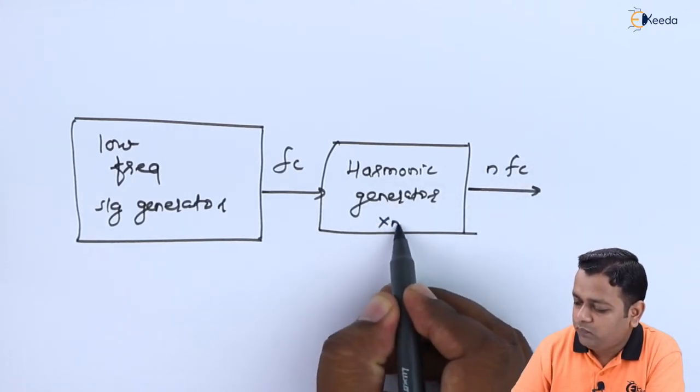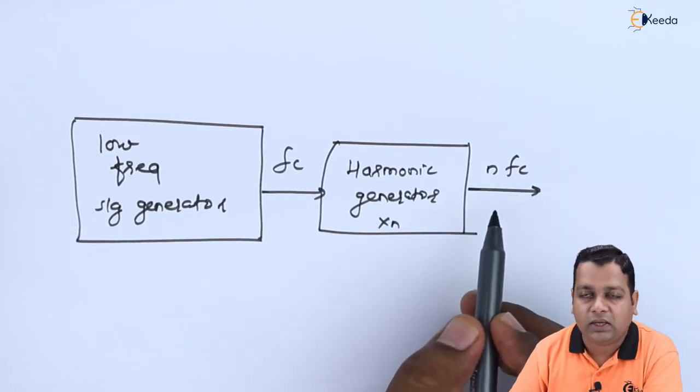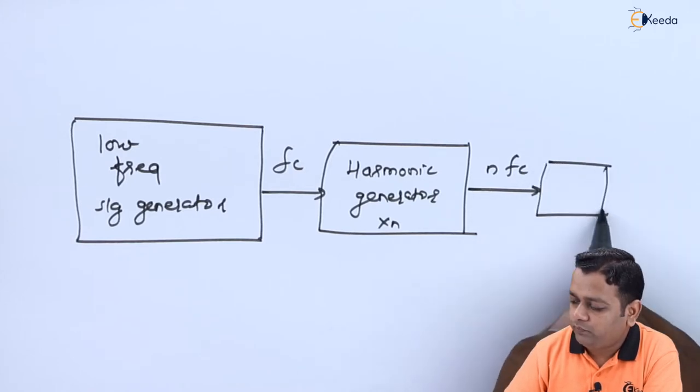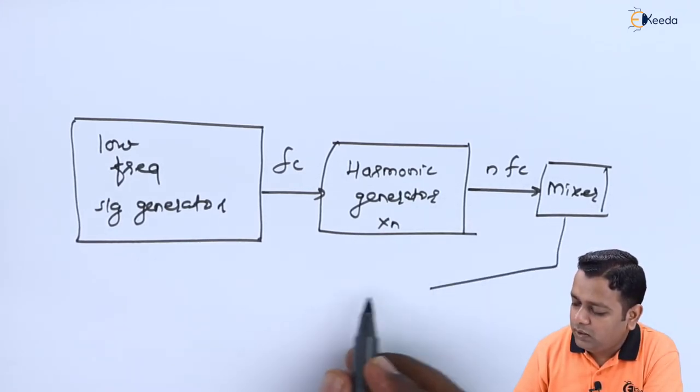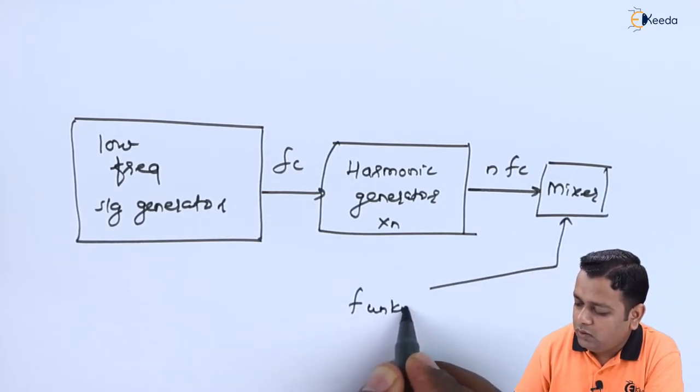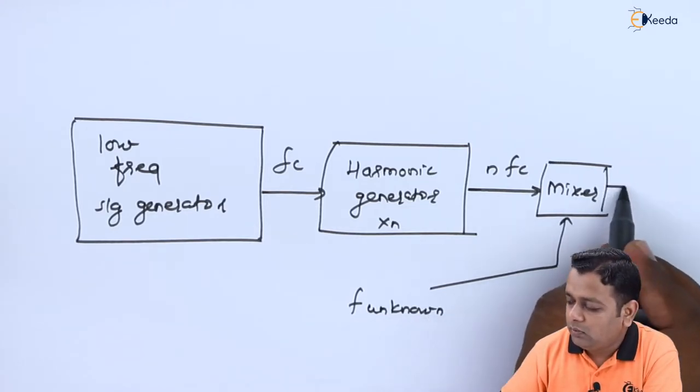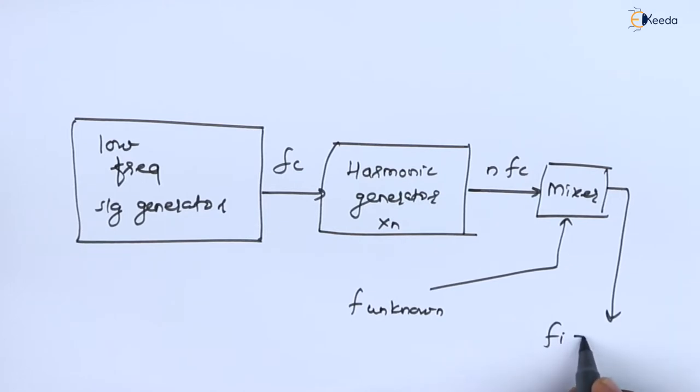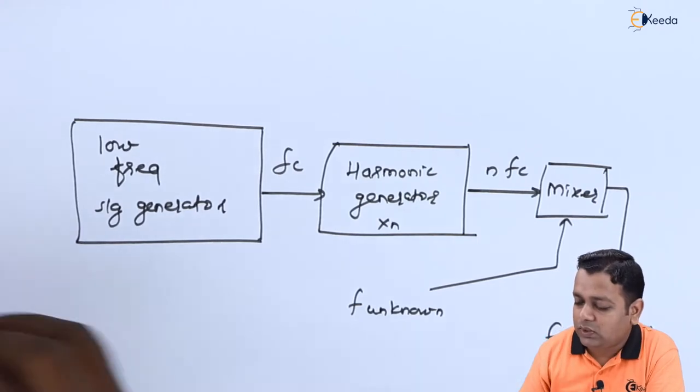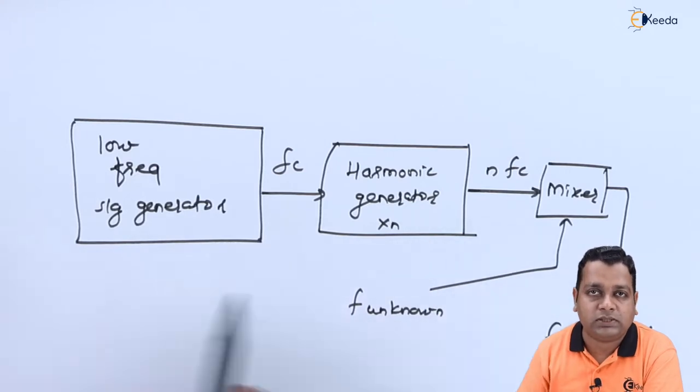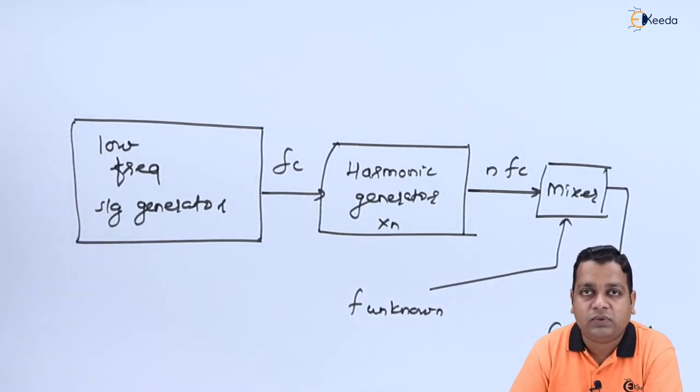When we use a mixer, the mixer is paired with this known frequency signal along with another input of unknown frequency value. The resultant of this mixer will be the intermediate frequency, which is basically the difference of the known and unknown frequency value. From that comparison we can have the value of the unknown frequency measured. This technique is categorized under the electronic type as we require electronic devices: low frequency signal generator, harmonic generator, and mixer. The other way is mechanical, which we shall discuss now.